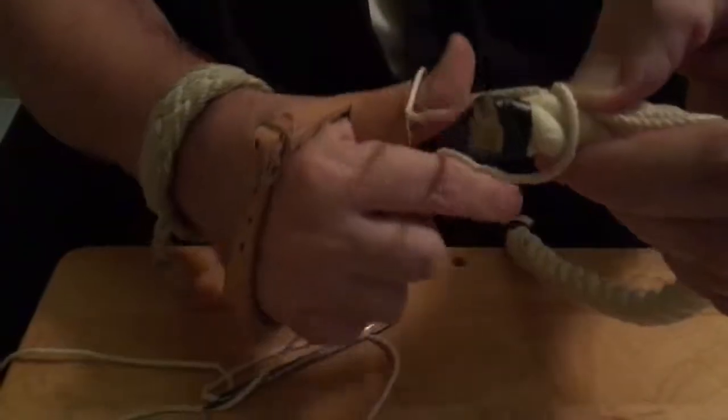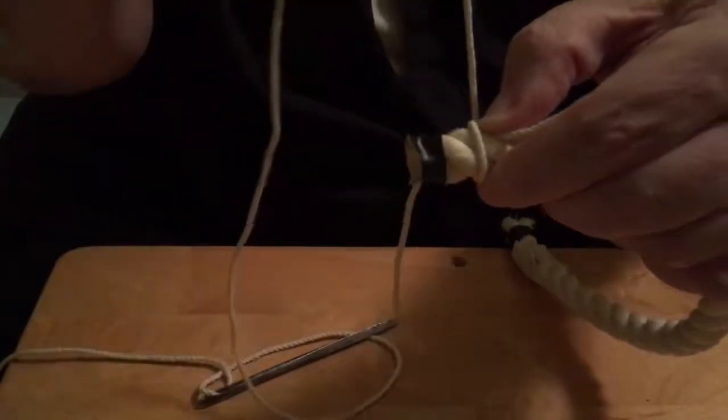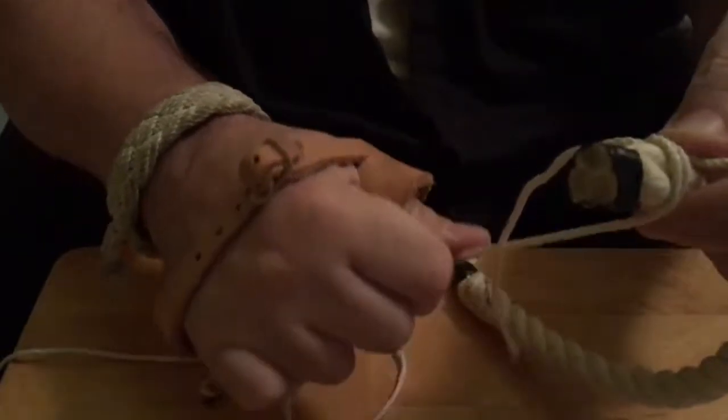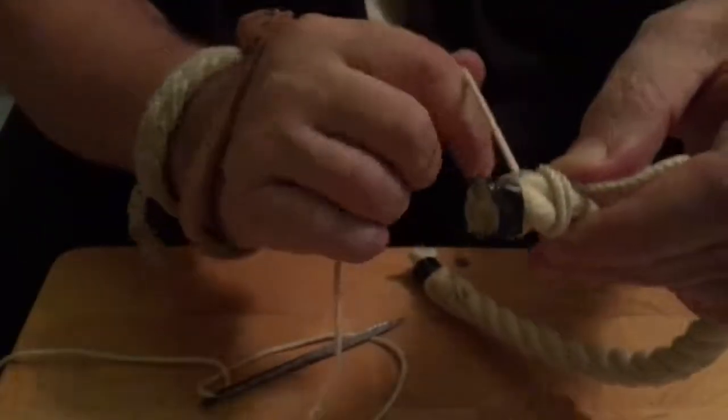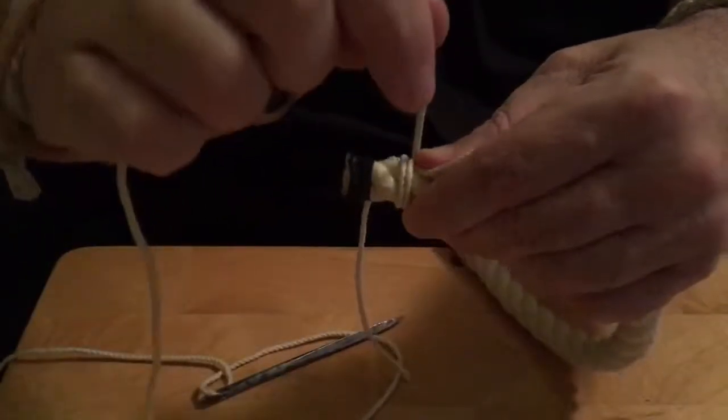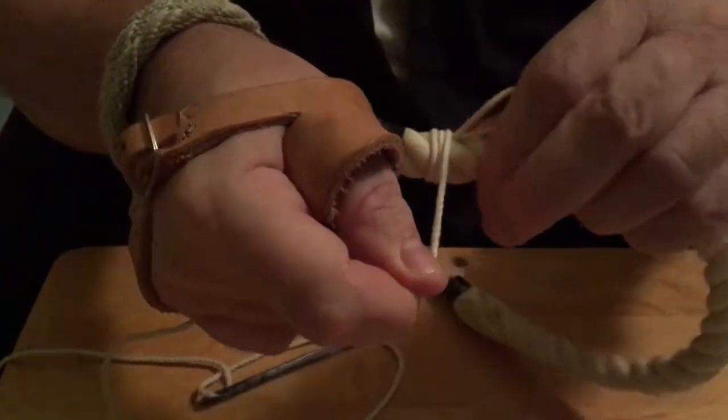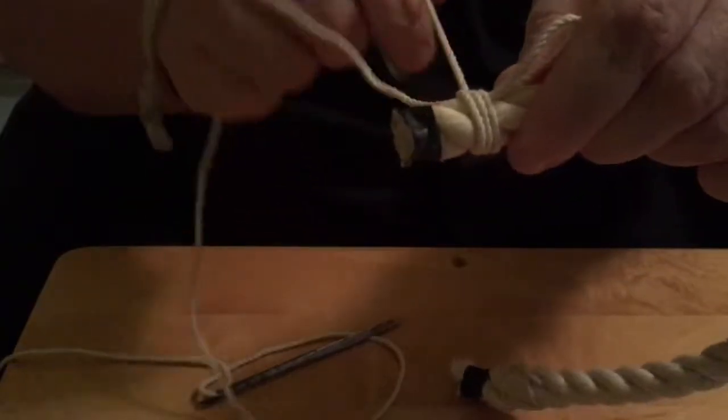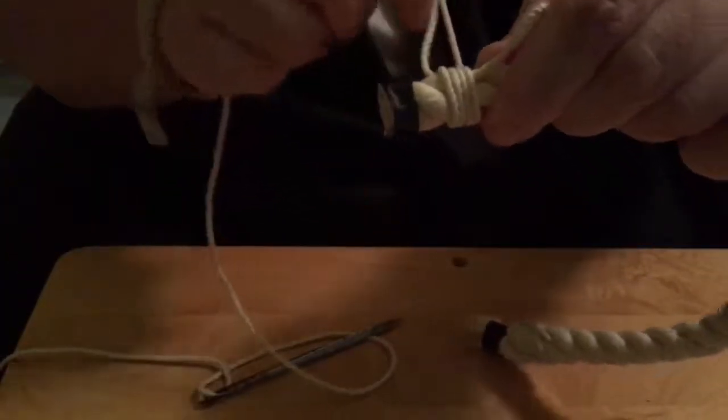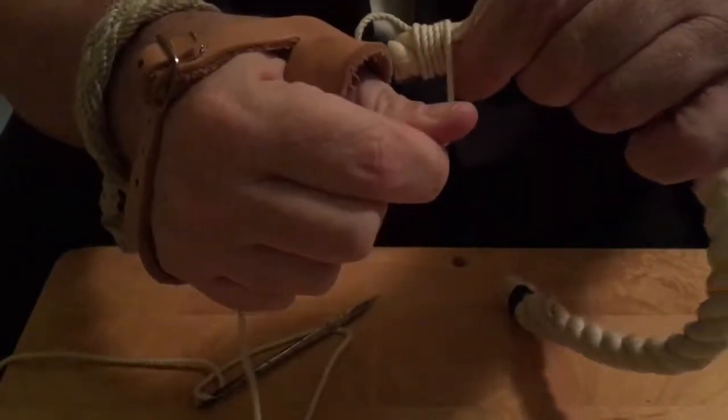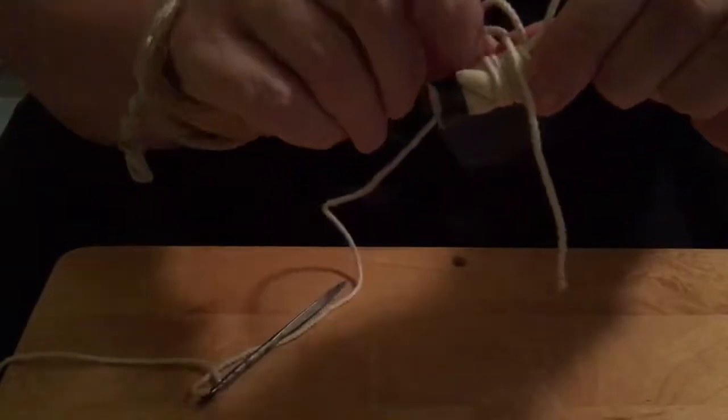You can take your finger off and then continue wrapping until you reach about the thickness of the diameter of the line.